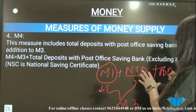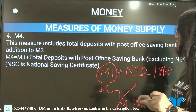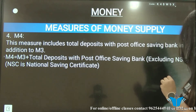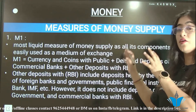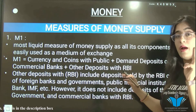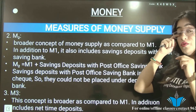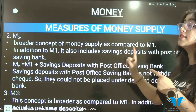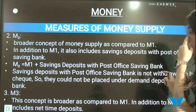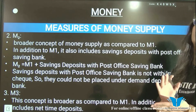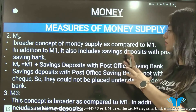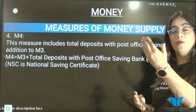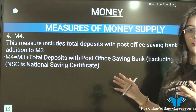To revise: M1 = currency and coins with the public + other deposits with RBI + demand deposits with commercial banks. M2 = M1 + saving deposits with post office saving bank. M3 = M1 + net time deposits with banks. M4 = M3 + total deposits with post office saving banks, excluding NST.